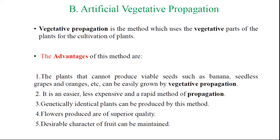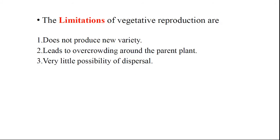The second one: it is easier, less expensive, and a rapid method of propagation. By using a part of the plant, we can develop a number of plants. With the help of vegetative propagation, a genetically identical plant can be produced. The flowers produced are of superior quality, and the desirable characters of fruits can be maintained by vegetative propagation.